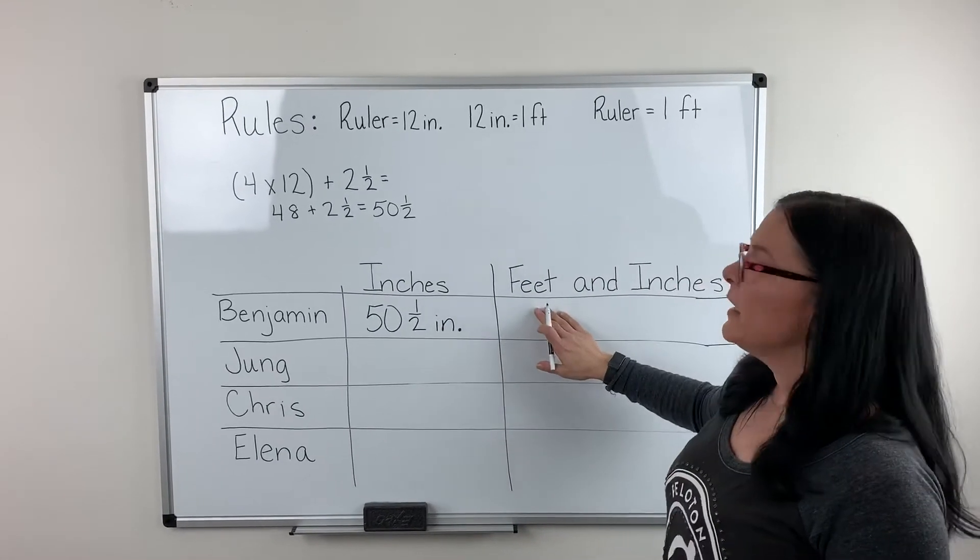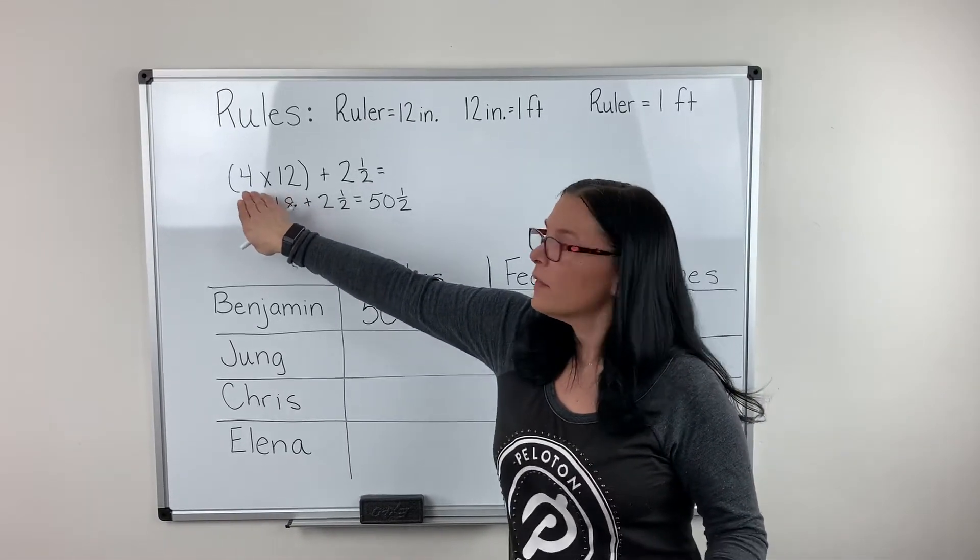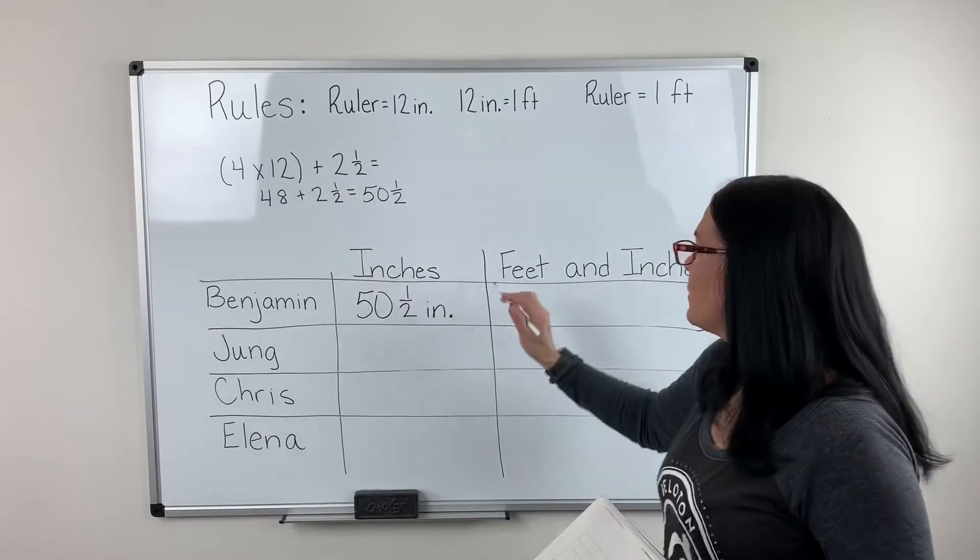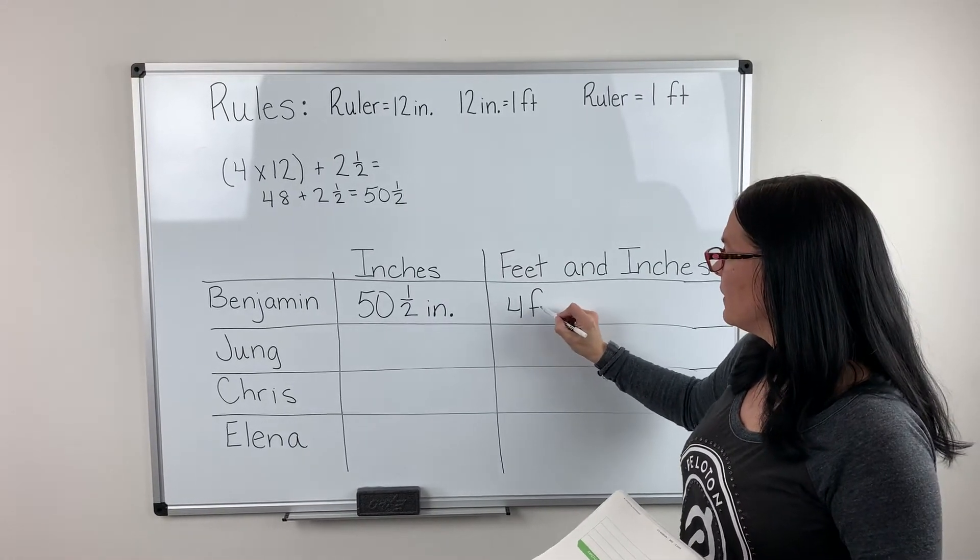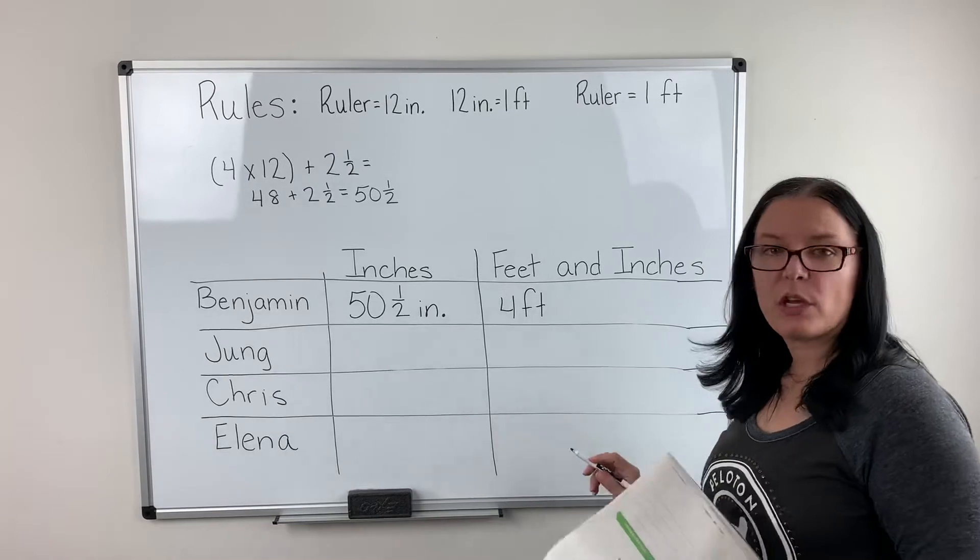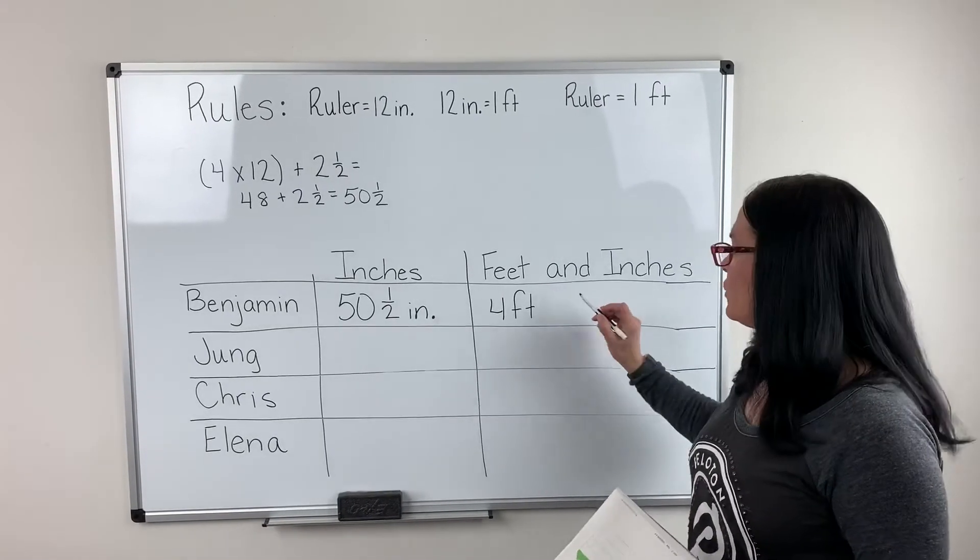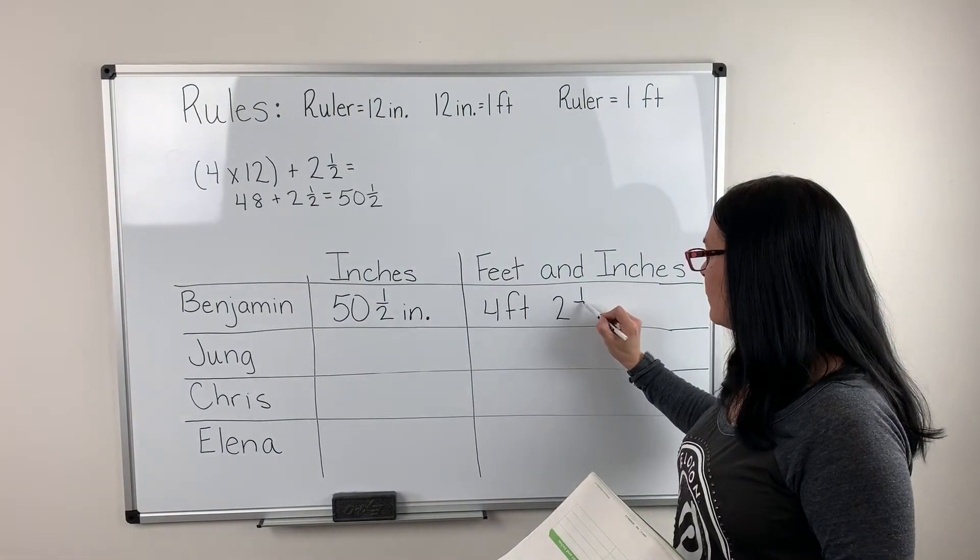To figure out the feet, we already know that it was four times 12, so I know that four rulers means four feet, and then I'm just going to add my inches in. He did two and a half more inches.